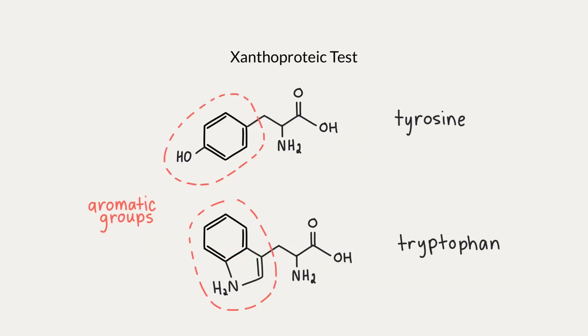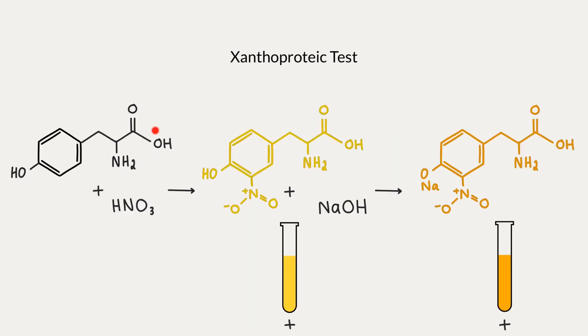The xanthoproteic test detects aromatic amino acids, tyrosine and tryptophan. We add concentrated nitric acid to our protein or amino acid solution, which causes the phenyl ring to become nitrated, yielding a yellow coloured nitro derivative. Then we add some base because at alkaline pH, the colour changes to orange due to the ionisation of the phenyl group.